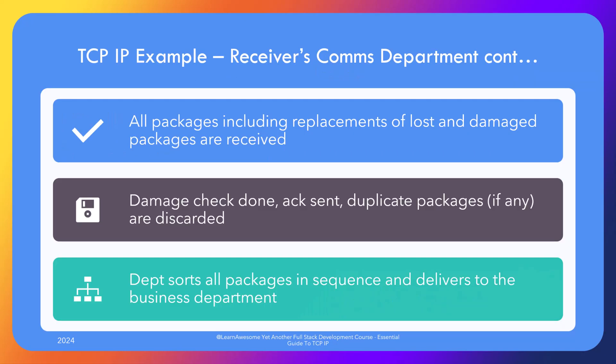Finally, in the client comms department the missing packet as well as the replacement for the damaged package arrive, and the department notices another packet — the one that didn't arrive in time — is also there. So now there are two packets with the same sequence number. Turns out a ship was stuck in the mud causing all sea freight to be delayed, but by that time the sender had sent another copy. No worries — since they are duplicates, the client can throw one of the packets in the trash. Now the client's comms department has all the packets, error and checksum checked, sends acknowledgement, sorts them neatly in sequence, and delivers them upstairs.